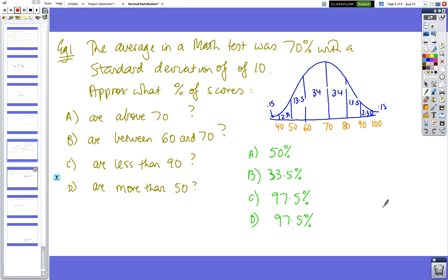So we've got the average in a math test was 70 with a standard deviation of 10. You didn't have to calculate it—you were told it. So let's have a look. We put the average to 70, and then we go plus 10 is 80, plus 10 is 90,